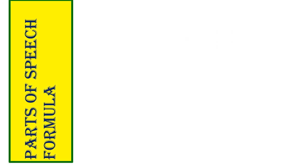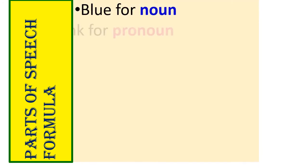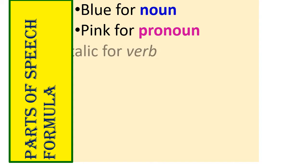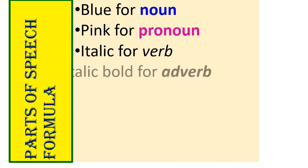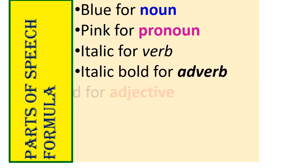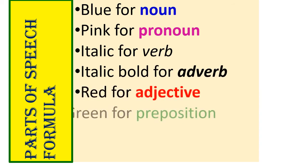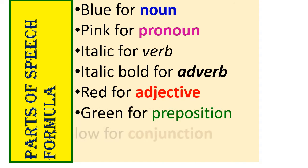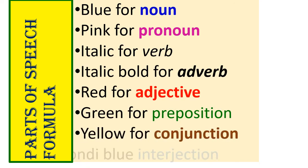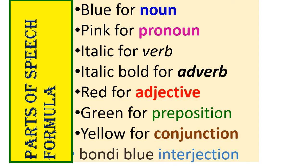Parts of Speech Formula, designed by V3S and M from Domaro: Blue for Noun, Pink for Pronoun, Italic for Verb, Italic Bold for Adverb, Red for Adjective, Green for Preposition, Yellow for Conjunction.